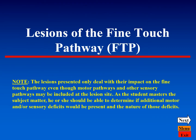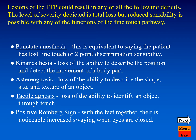The following lesions will only address the fine touch pathway, even though they may impact other sensory or motor pathways. Listed below are terms associated with deficits of the fine touch pathway: punctate anesthesia or loss of two-point discrimination; kinanesthesia, the inability to describe position, location, and movement of a body part; stereoagnosis, the inability to describe the size, shape, and texture of an object; tactile agnosis, the inability to identify an object by touch; and the positive Romberg sign, where a person shows noticeable swaying when standing with feet close together and eyes closed.